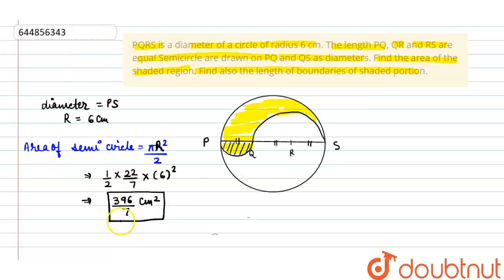Now, come to the second part as diameter. We can say PS. The value of PS is when the radius of this circle is 6, it means diameter is 6 plus 6 means 12 centimeter. We have given PQ equals to QR equals to RS. In the question, it is mentioned.